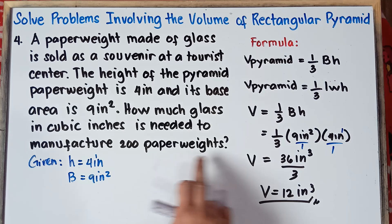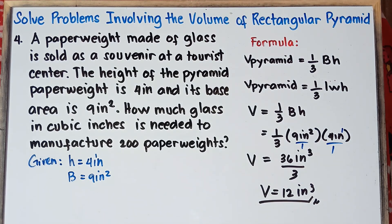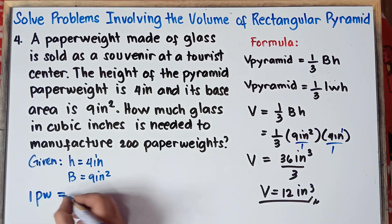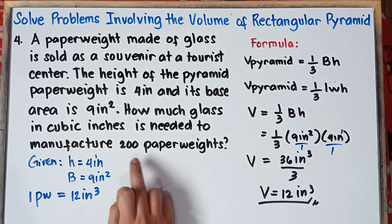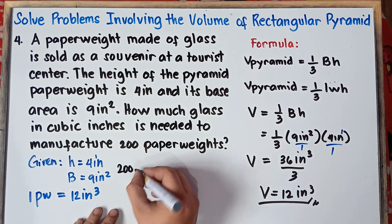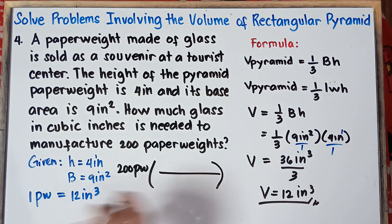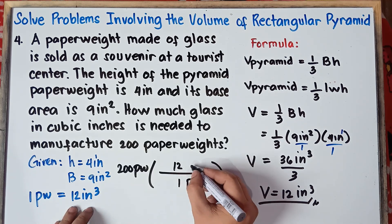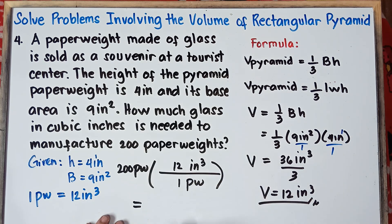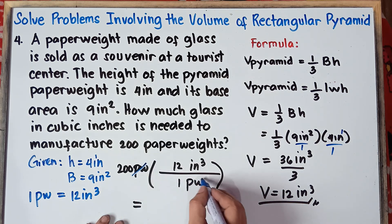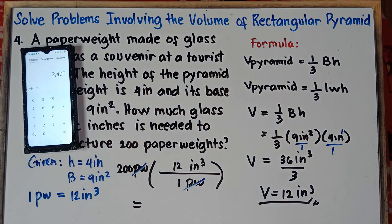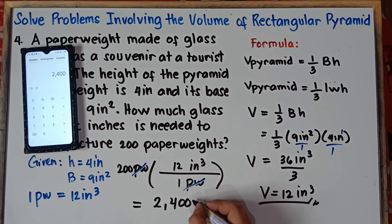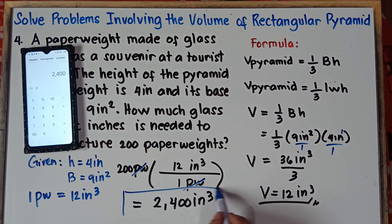We need to manufacture 200 paperweights. Using unit conversion: 200 paperweights times 12 cubic inches per 1 paperweight. The paperweight units cancel out, and we simply multiply: 200 times 12 equals 2,400 cubic inches. So 2,400 cubic inches of glass is needed to manufacture 200 paperweights. That's the answer for Example 4.